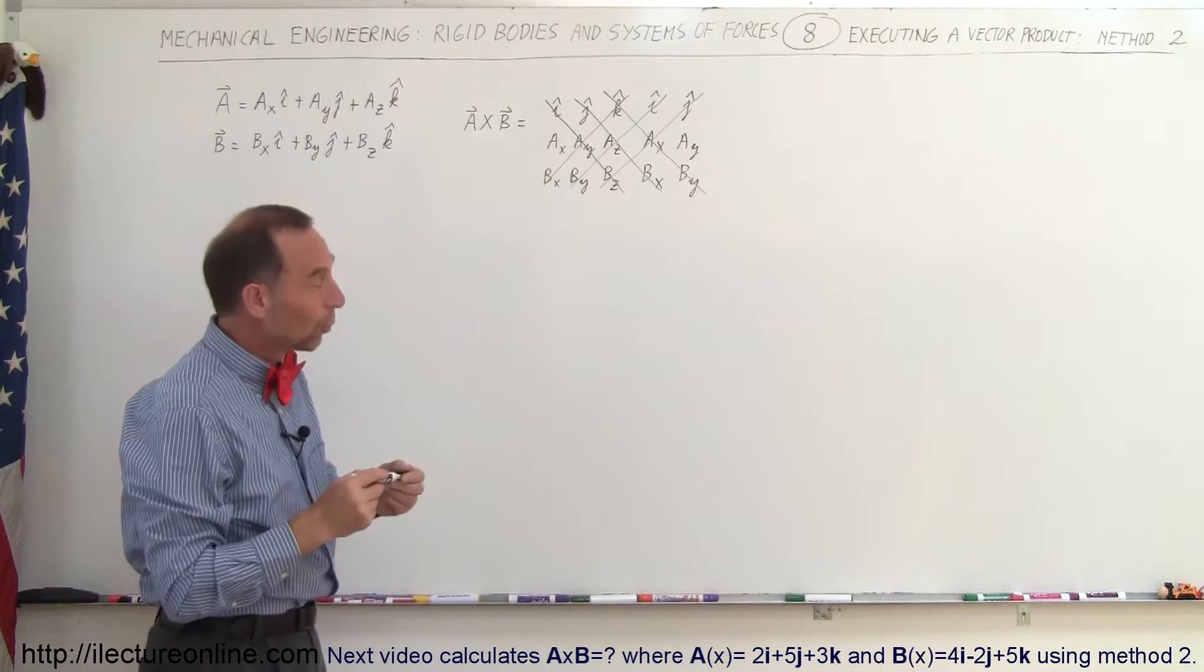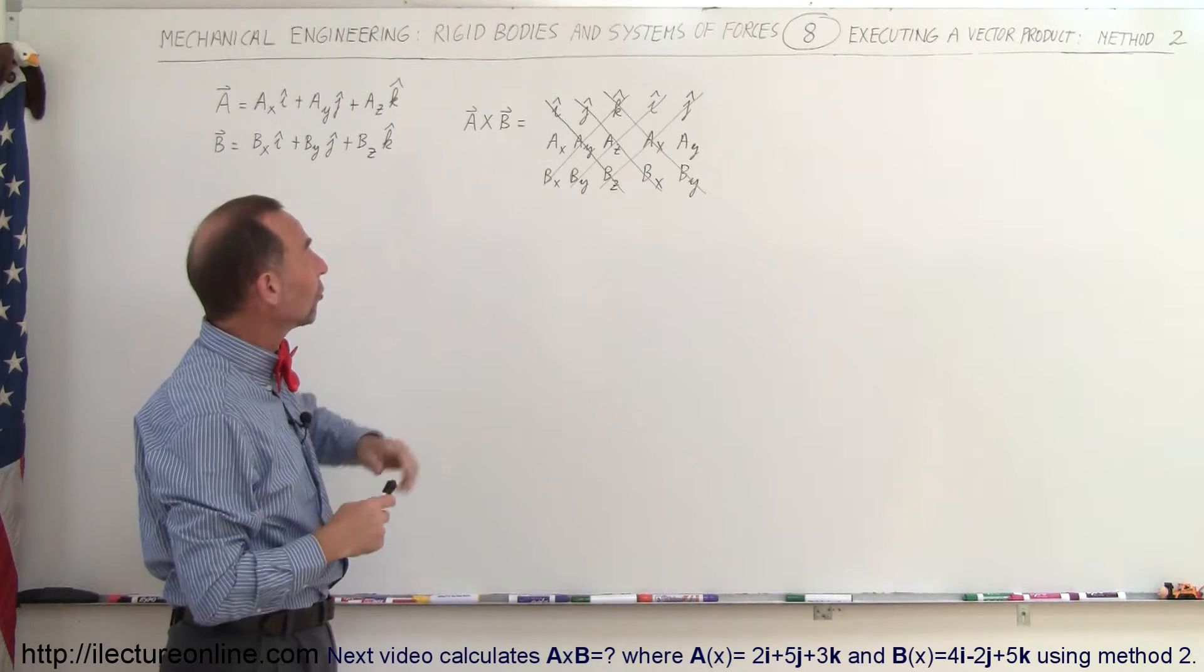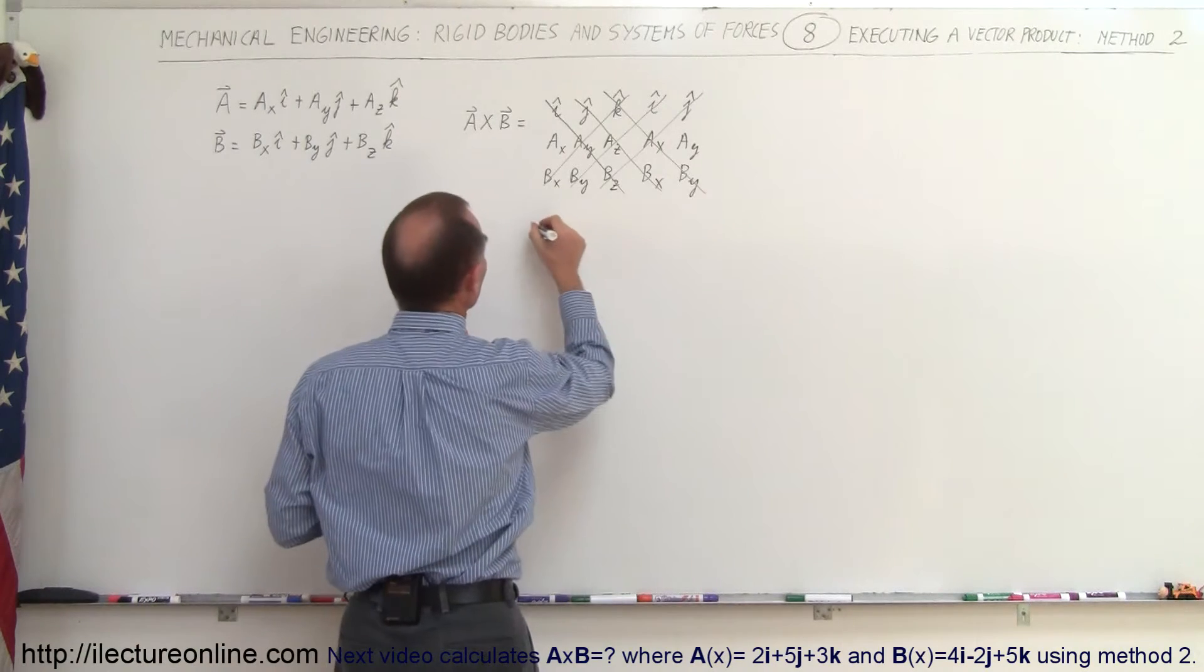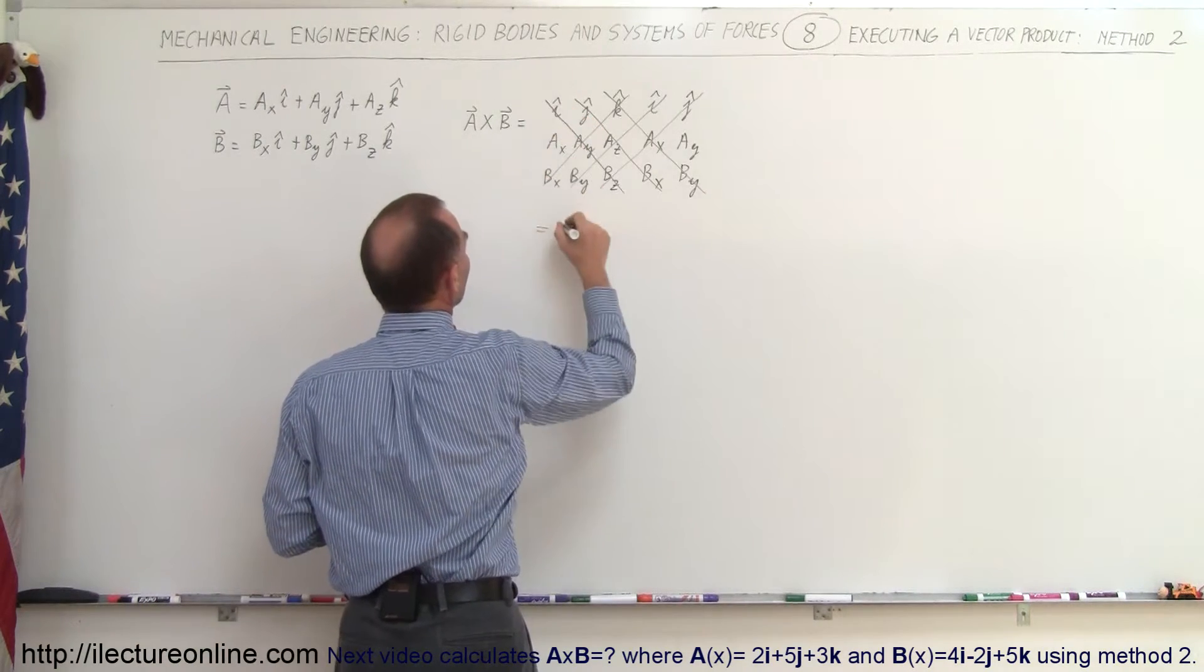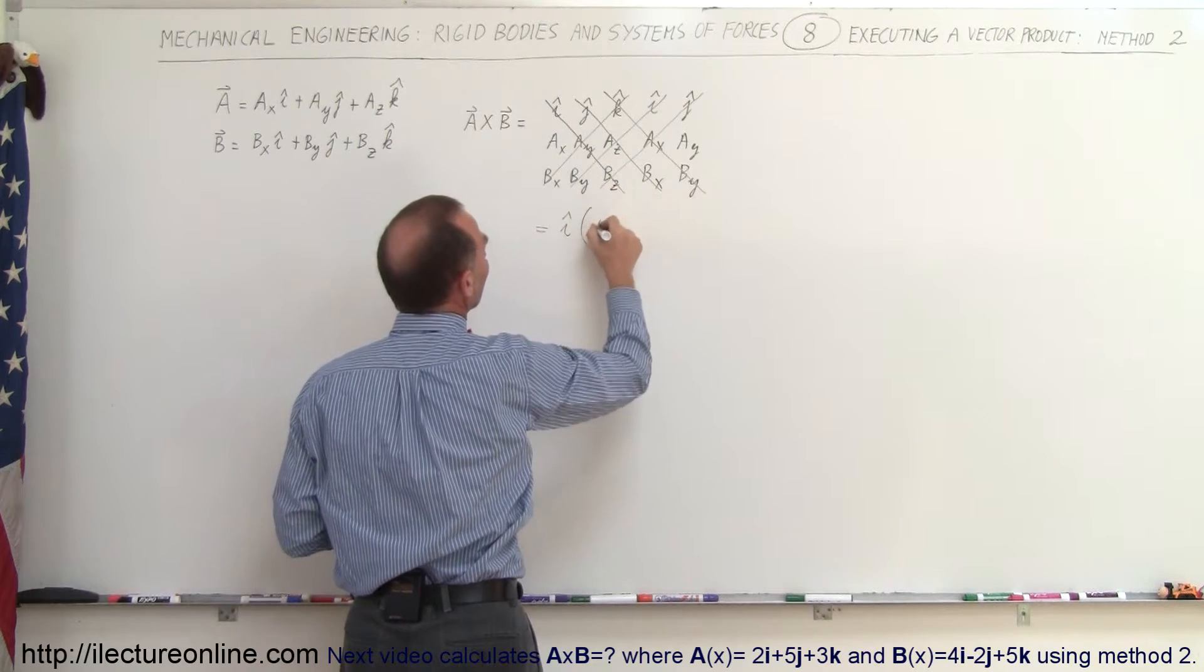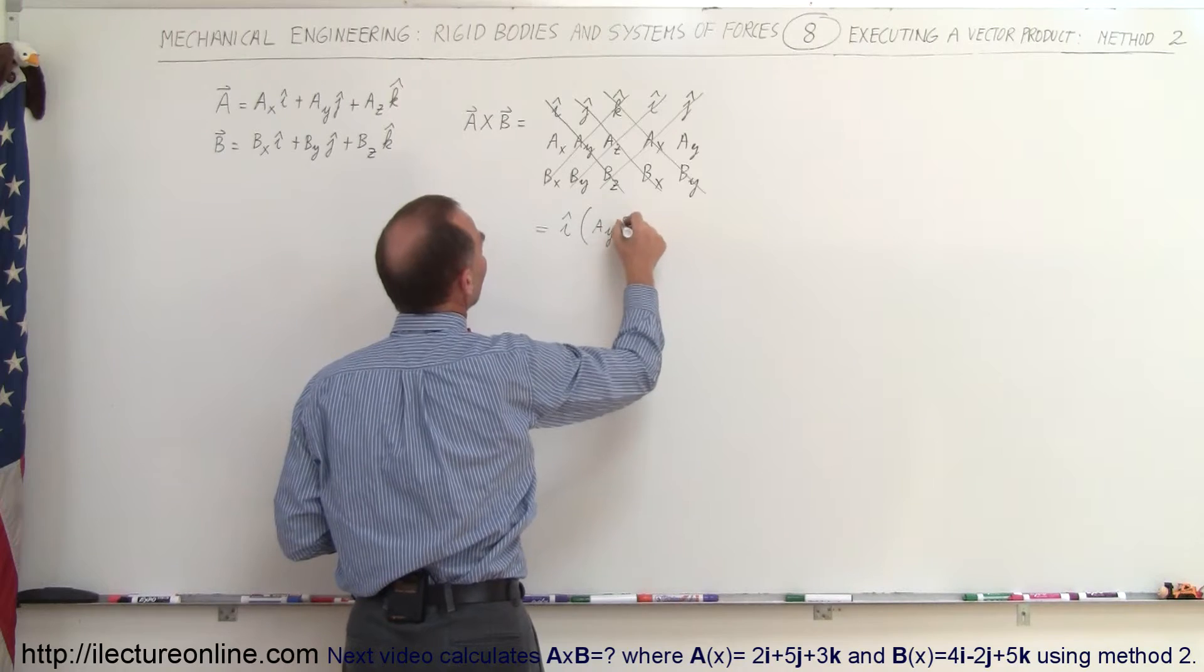So why did I do that? Well it turns out that you can also write A cross B as the following. We take the first vector right here, I vector, and then we multiply that times A sub Y times B sub Z. So A sub Y times B sub Z.